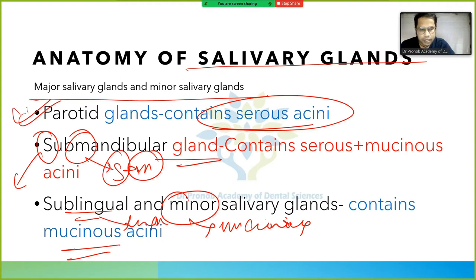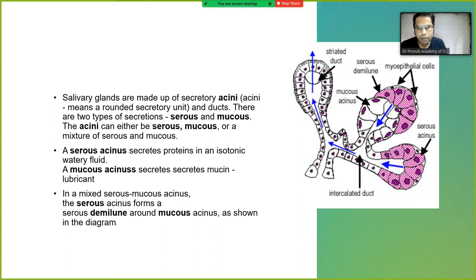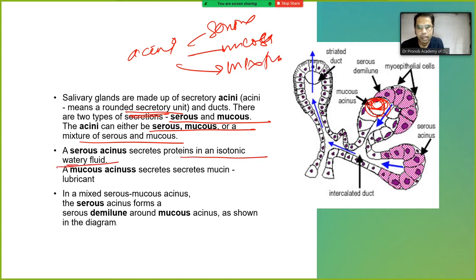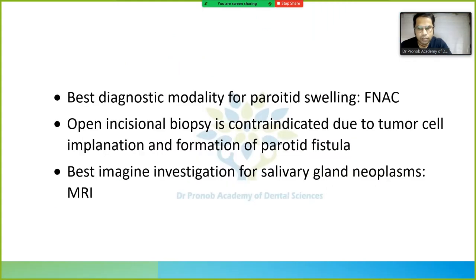Salivary glands are made up of secretory acini — round secretory units — and ducts. There are two types of secretion: serous and mucous. Serous acini secrete protein in an isotonic watery fluid, while mucous acini secrete mucin. Mixed acini produce both.